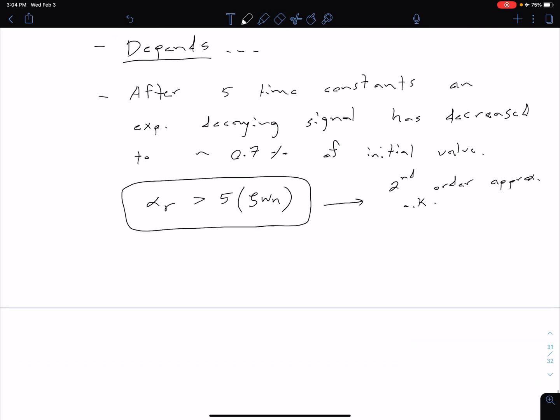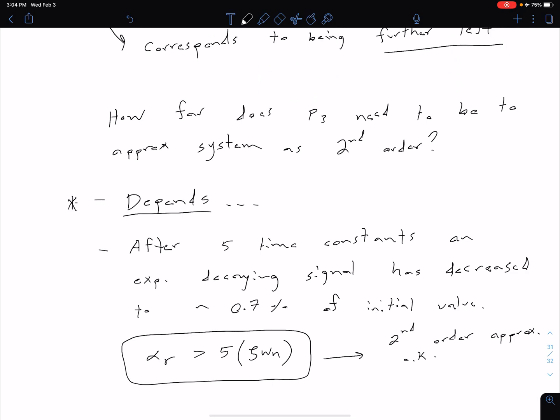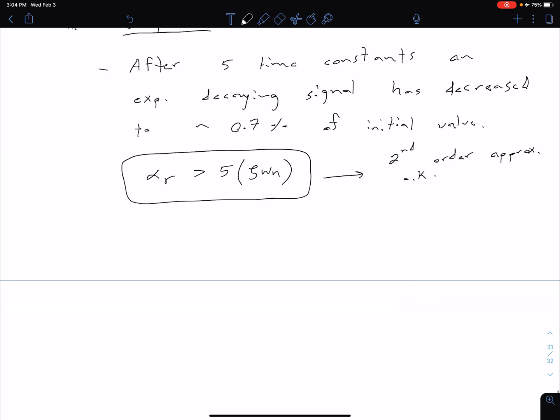In other words, looking at our S-plane, we're saying that P3 needs to be five times farther to the left than P1 and P2 to approximate as second order. If that condition is met, and again keep in mind it depends—sometimes you might need to be more stringent if you require a lot of accuracy, so maybe in some cases you might change this to 10. Maybe you're being a little looser for that first run through to just get an idea, so maybe this can be three or something smaller. But in general, we're going to say this is our common approximation that that real pole has to be five times farther to the left.